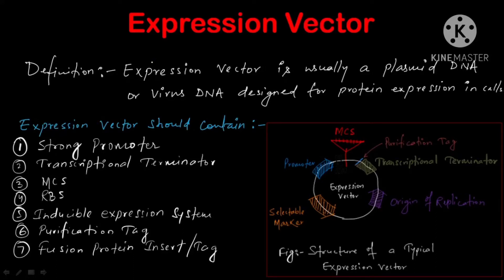Hello friends, Neeraj here. In this video lecture we discuss expression vectors. After getting a large copy number of our gene of interest from the cloning experiment, another task is to get the protein of interest in a particular host system. For doing so, we need to have the expression vector. Expression vectors are specifically meant for protein expression in a particular cell, and they are usually made from plasmid DNA or viral DNA.